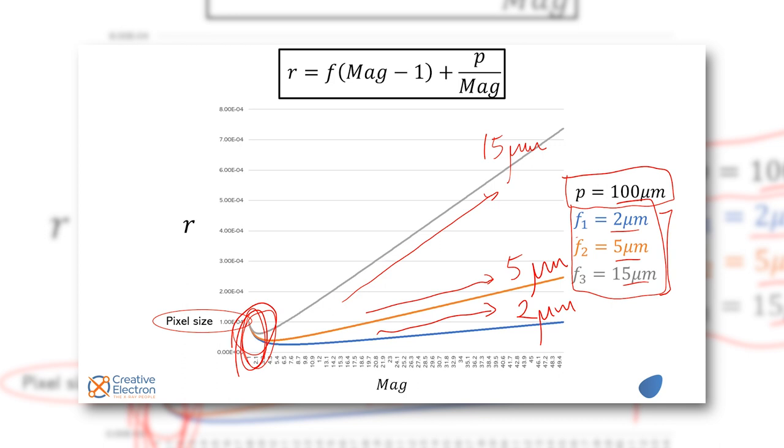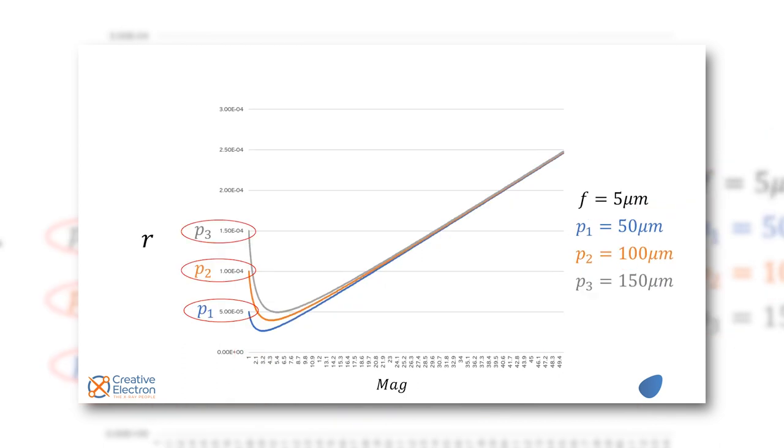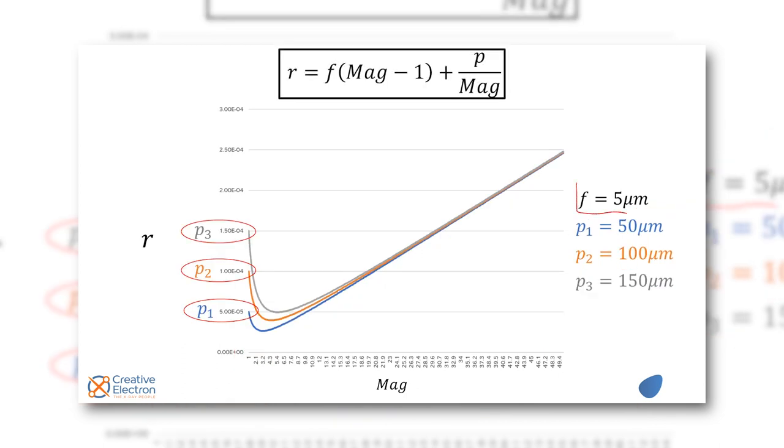So let's do the opposite, let's now pick one focal spot for the x-ray source and play with different pixel sizes. We have pixel size blue is 50 micron, orange is 100 micron, and gray is 150 microns. Just like we saw before, I love how these things all come together intuitively. The pixel size has a deep impact on low mag and not a major influence when you have high mag.